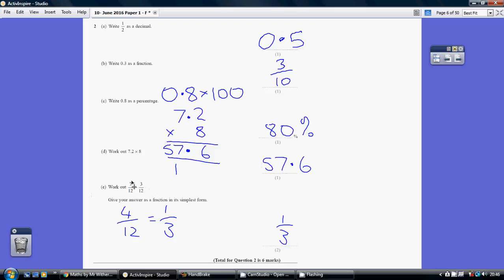Part E. When you are adding or subtracting fractions, if you've got the same common denominator—in other words, the number on the bottom is the same—you just need to follow the instructions. So 7 take away 3 is 4.